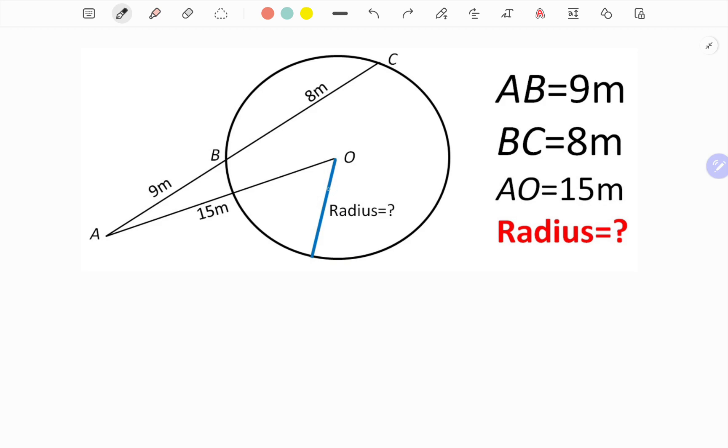Now we draw a perpendicular to the chord BC. We know that the radius perpendicular to any chord of a circle always bisects it. So by this, this length is 4 meters and this length is also 4 meters.